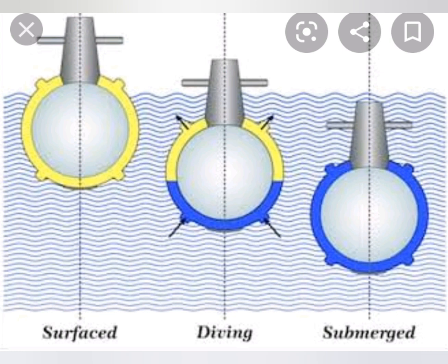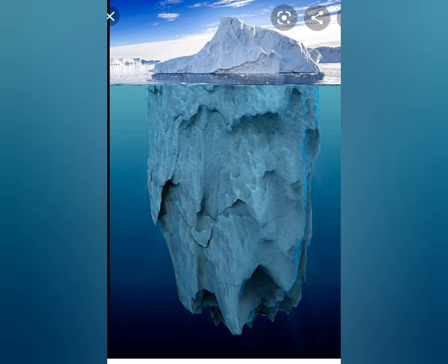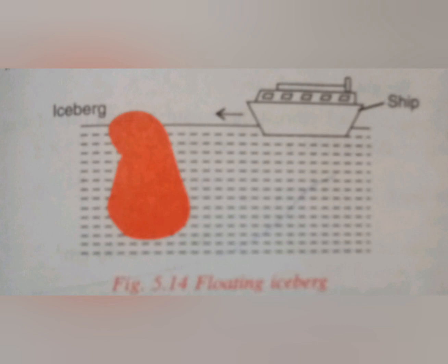The fifth point is icebergs. Icebergs are dangerous for ships. Being lighter than water, icebergs float with their major part — about 90% — inside the water, and only a small part — about 10% — outside the water. Since the portion of the iceberg inside the water depends upon the density of seawater, it becomes difficult for the driver of a ship to estimate the size of an iceberg. Thus, an iceberg is very dangerous for ships as it may collide with a ship and cause damage.